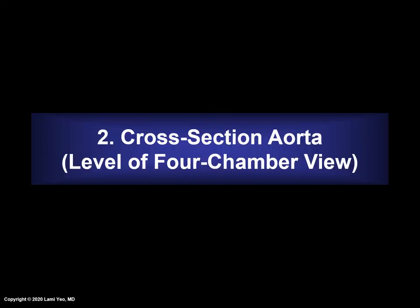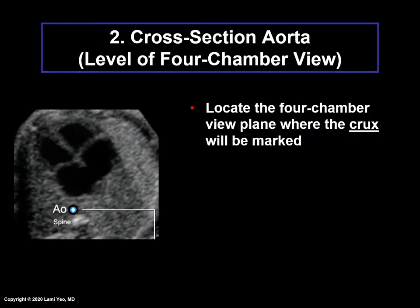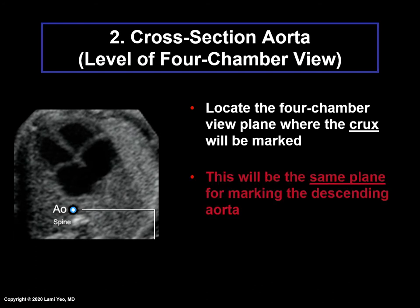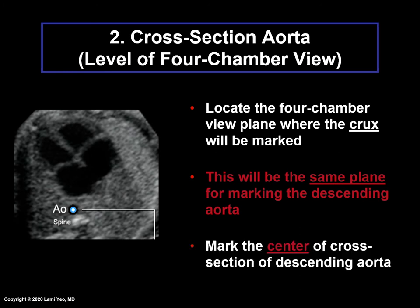To mark the second structure — the aorta at the level of the four-chamber view — one must locate the four-chamber view plane where the crux will be marked, because this will be the same plane for marking the descending aorta. Once you identify this four-chamber view plane, mark the center of the cross-section of the descending aorta as shown in the image.